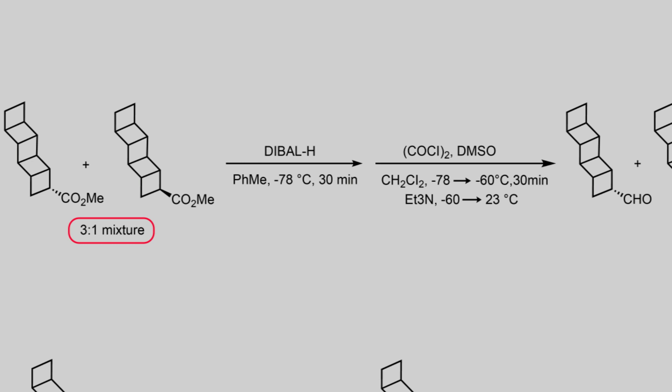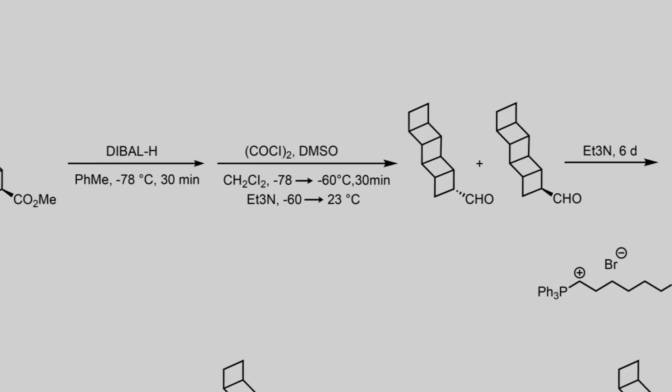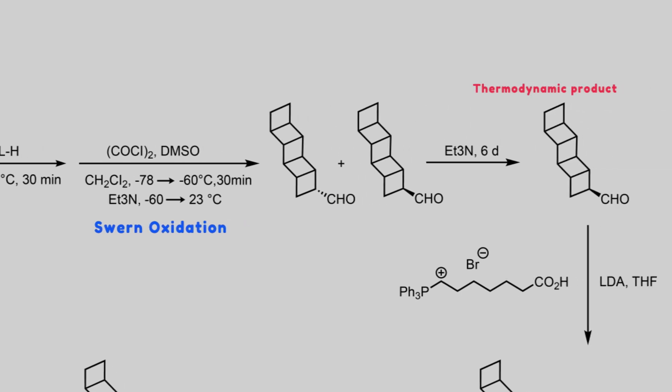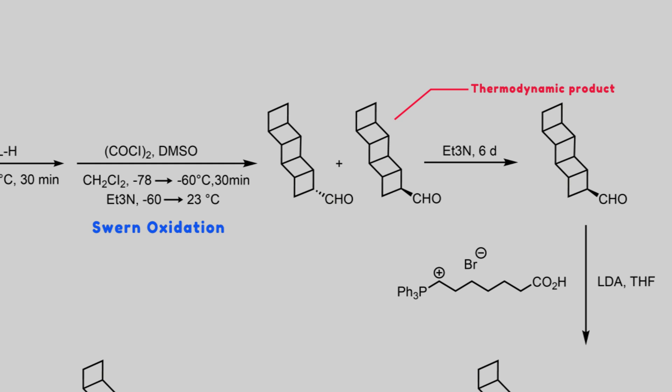In which the ester moiety is reduced by diisobutylaluminum hydride, followed by Swern oxidation, which provided the corresponding aldehydes. Since the exo-isomer is the thermodynamic product, exposure of this mixture of epimeric aldehydes to triethylamine as a solvent for six days delivered the desired exo-diastereomer.